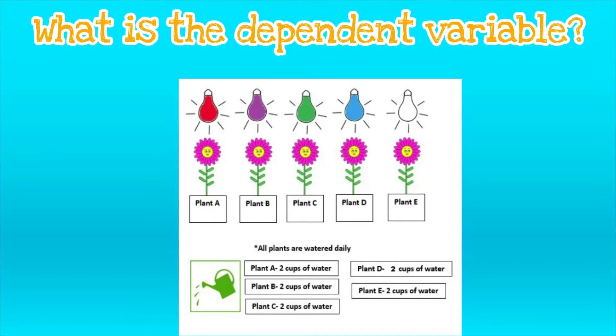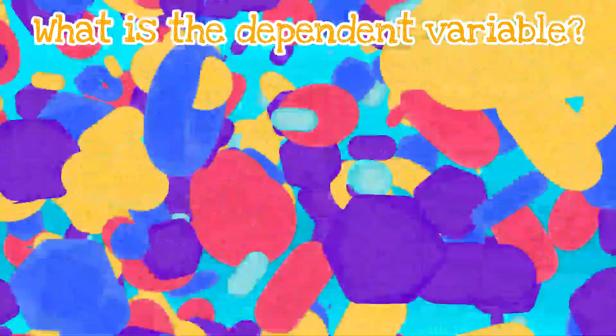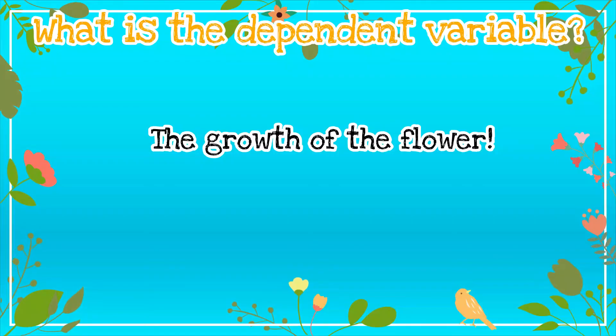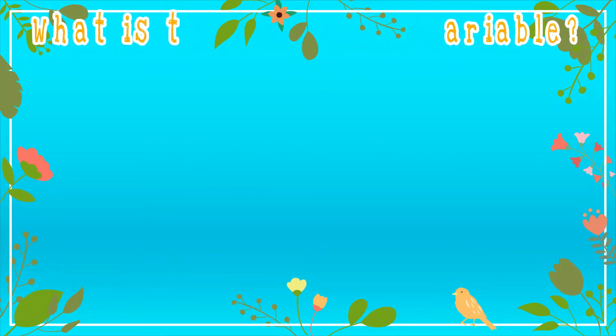So what is the dependent variable in this experiment? Well, the dependent variable is the growth of the flower. Because that is the part of the experiment that we are measuring.